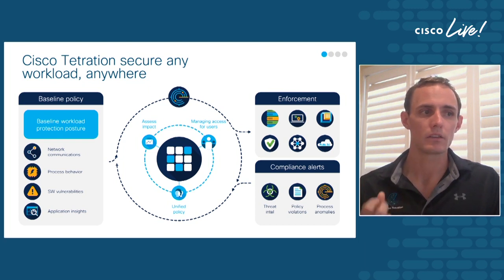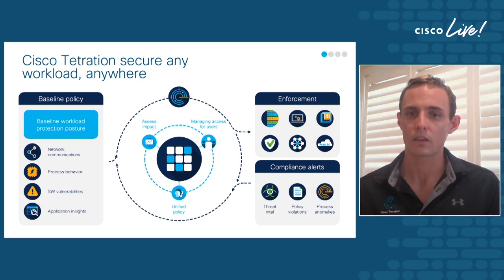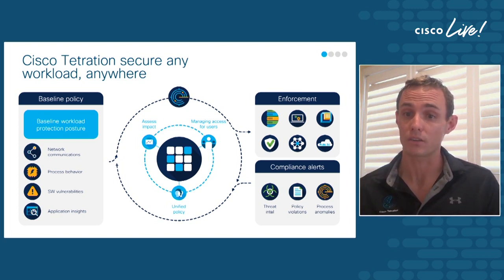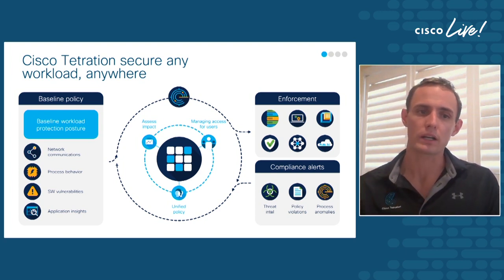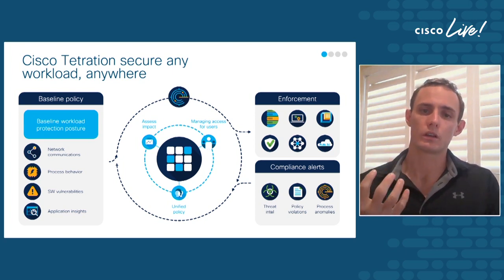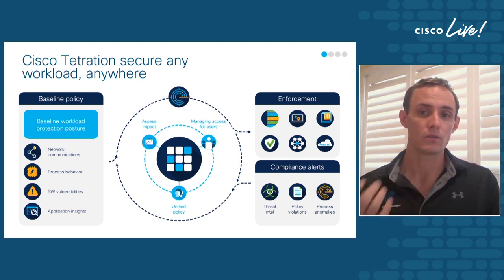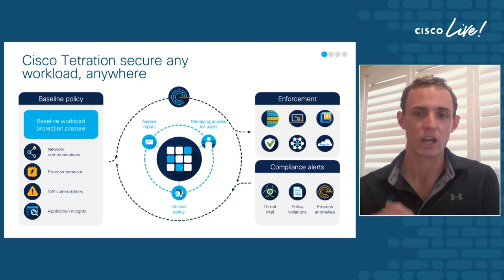The compliance alert capability brings in additional information, understanding things about the security of processes in the environment and using that to further harden the model. We can add information from third-party systems to make those informed decisions. The product works by learning what's going on, using advanced machine learning to build accurate application views and dependency views, then enforcing that consistently regardless of location, and adapting as the environment and threat landscape within and around our data centers changes.